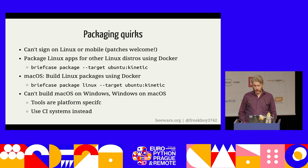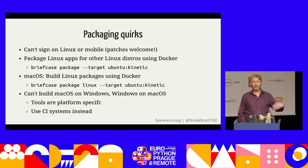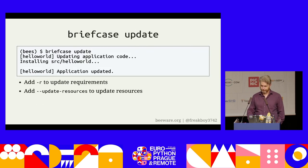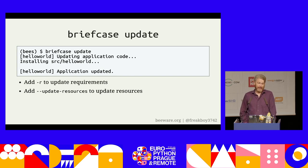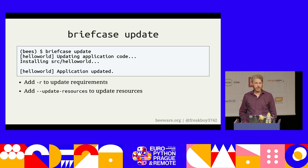Unfortunately, this doesn't currently work on native Windows, though it will work under WSL. You also can't build a macOS package on Windows or a Windows package on Linux because the tooling is platform-specific — CI platforms are your friend here. If you've distributed your app and are now working on version 2, you can run `briefcase update`. By default this reinstalls the code for your app. Add `-r` to update requirements, or `--update-resources` to update application resources like icons.